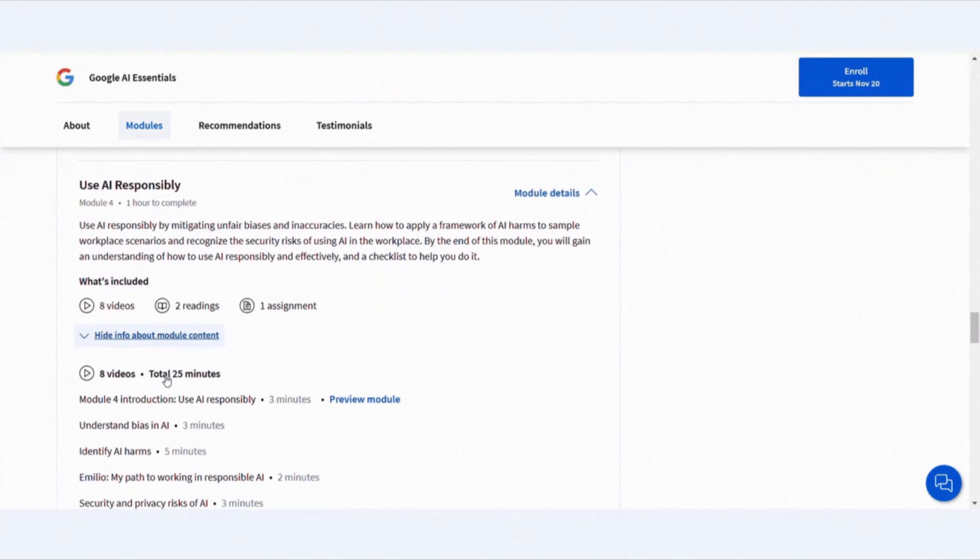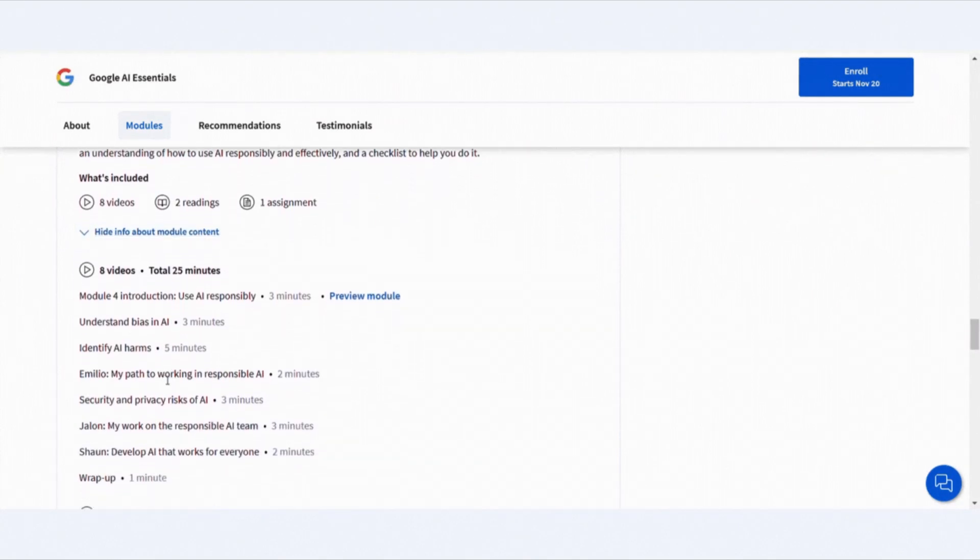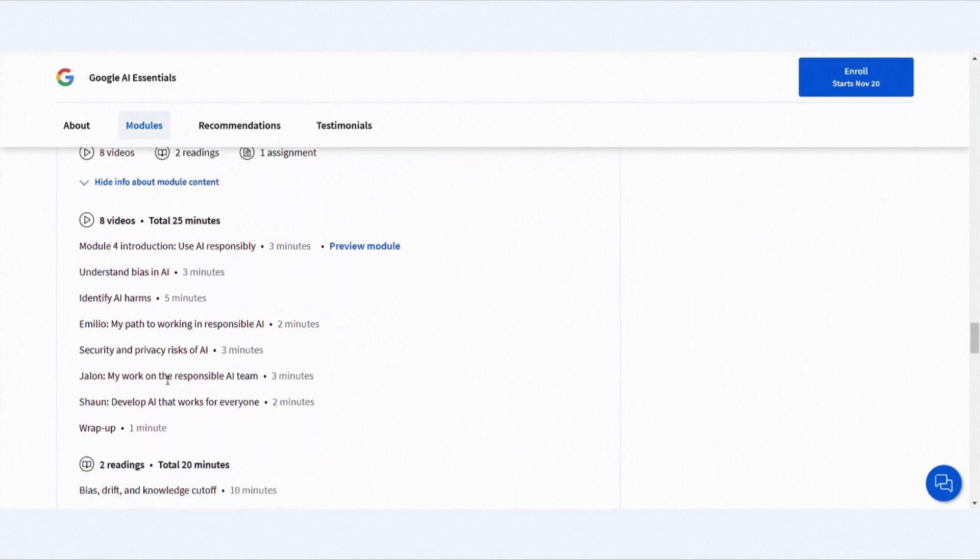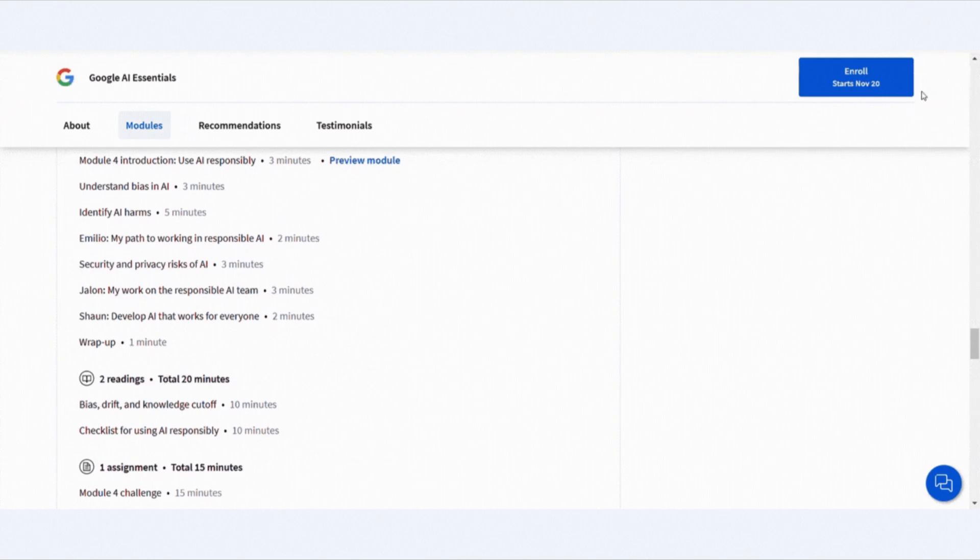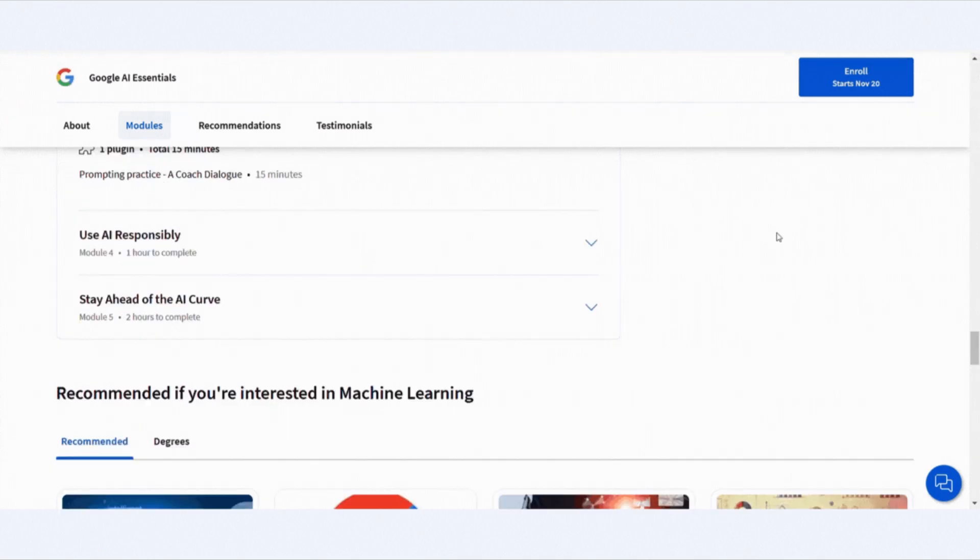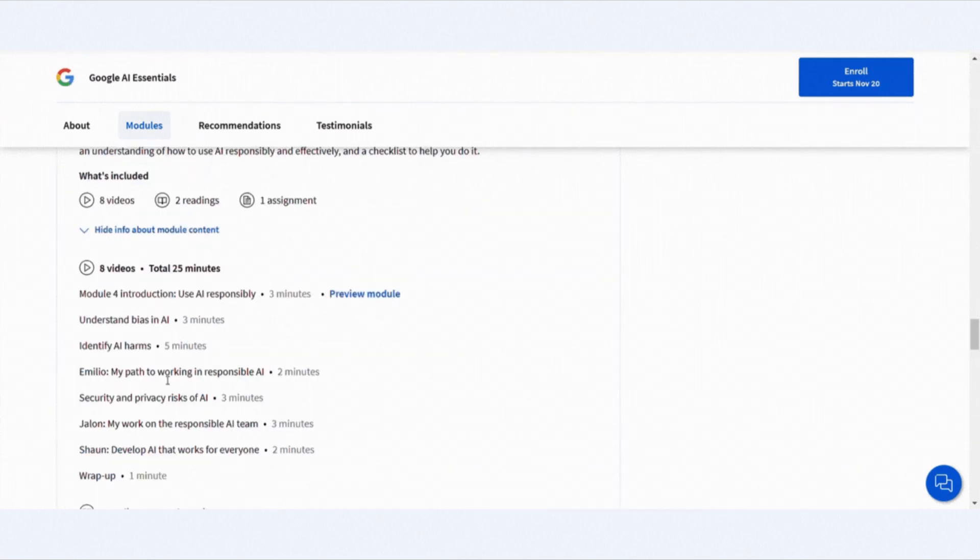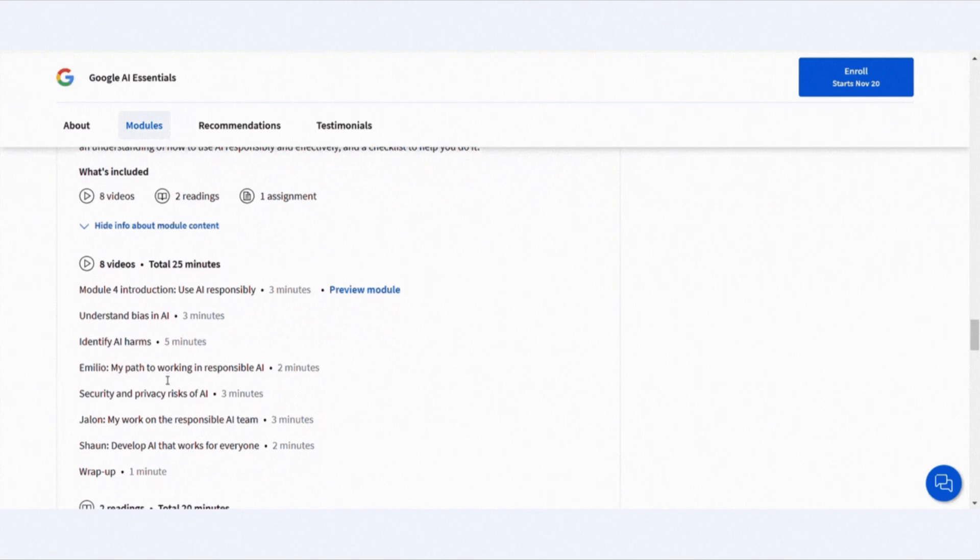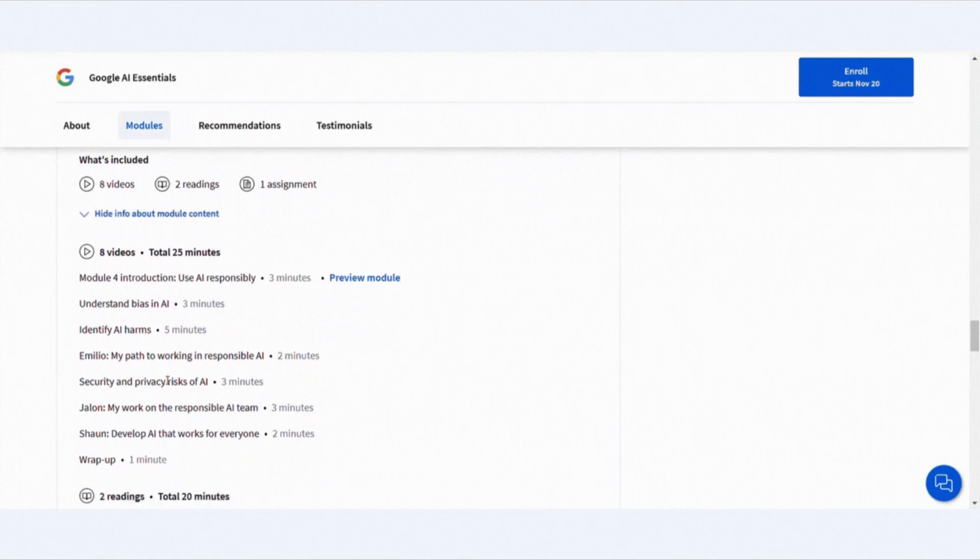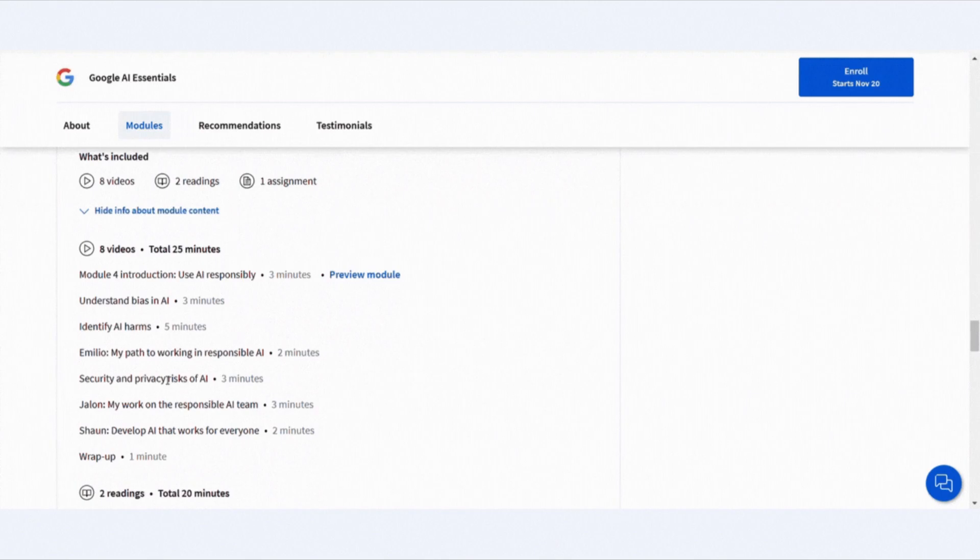Once you are comfortable using AI tools effectively, the course highlights another key topic: using AI responsibly. The course covers responsible AI use, which is about making sure AI is used in a fair and ethical way. You will learn how to avoid problems like bias or misuse of data while respecting people's privacy. The course gives you a simple checklist to help you follow these principles. This section is important because it teaches you to think carefully about how AI can impact people and society.